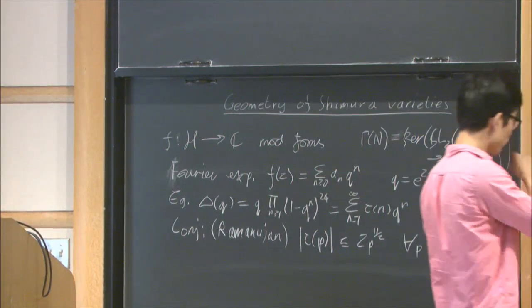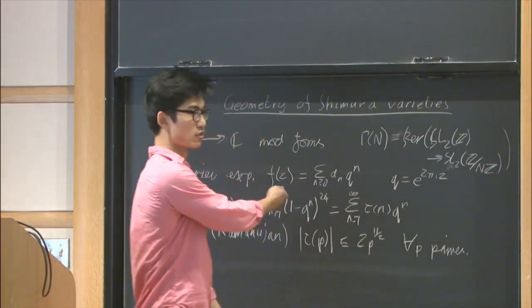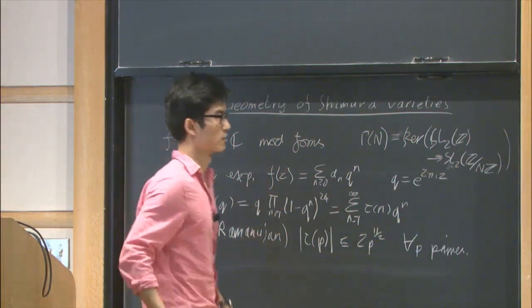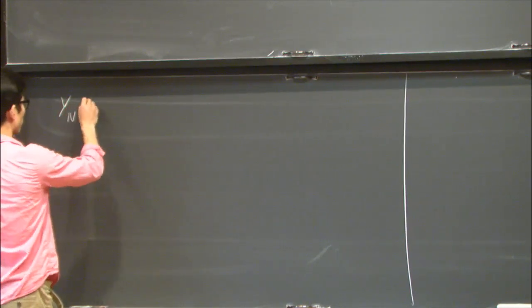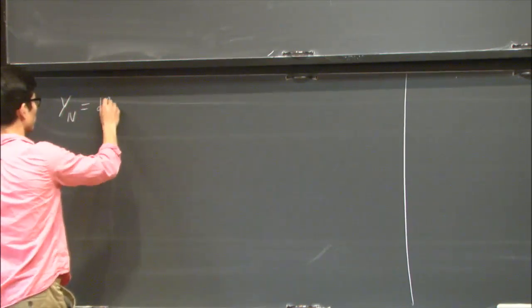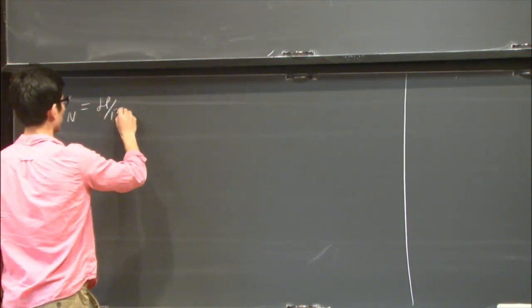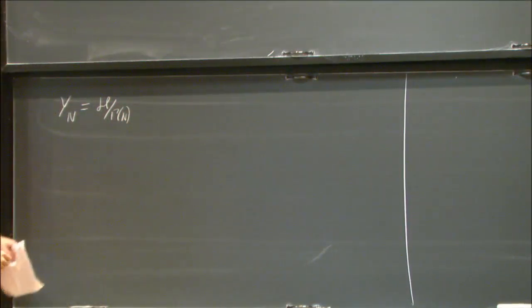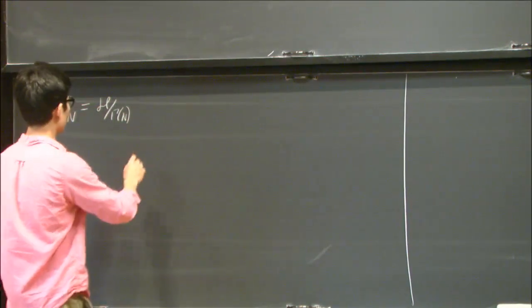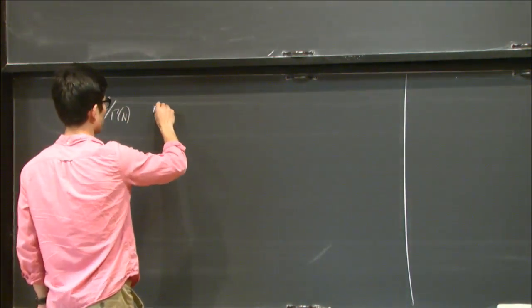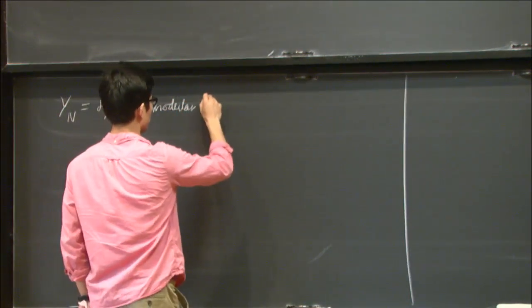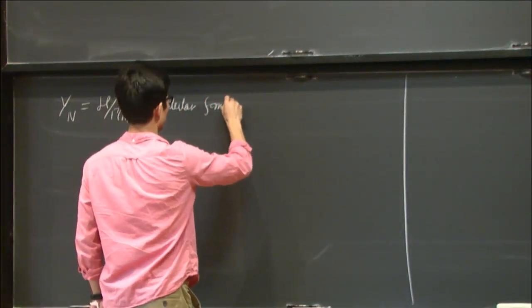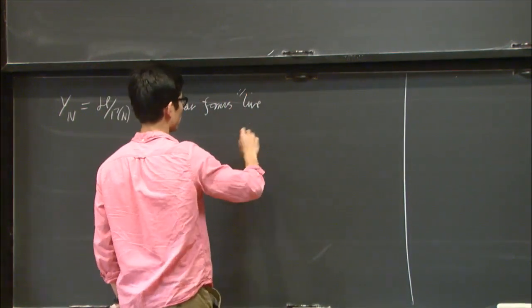To explain this, we need to give a different interpretation of modular forms, a more algebraic interpretation. I'll define yn to be the quotient of the upper half plane by this congruence subgroup gamma n, and this is like a Riemann surface.